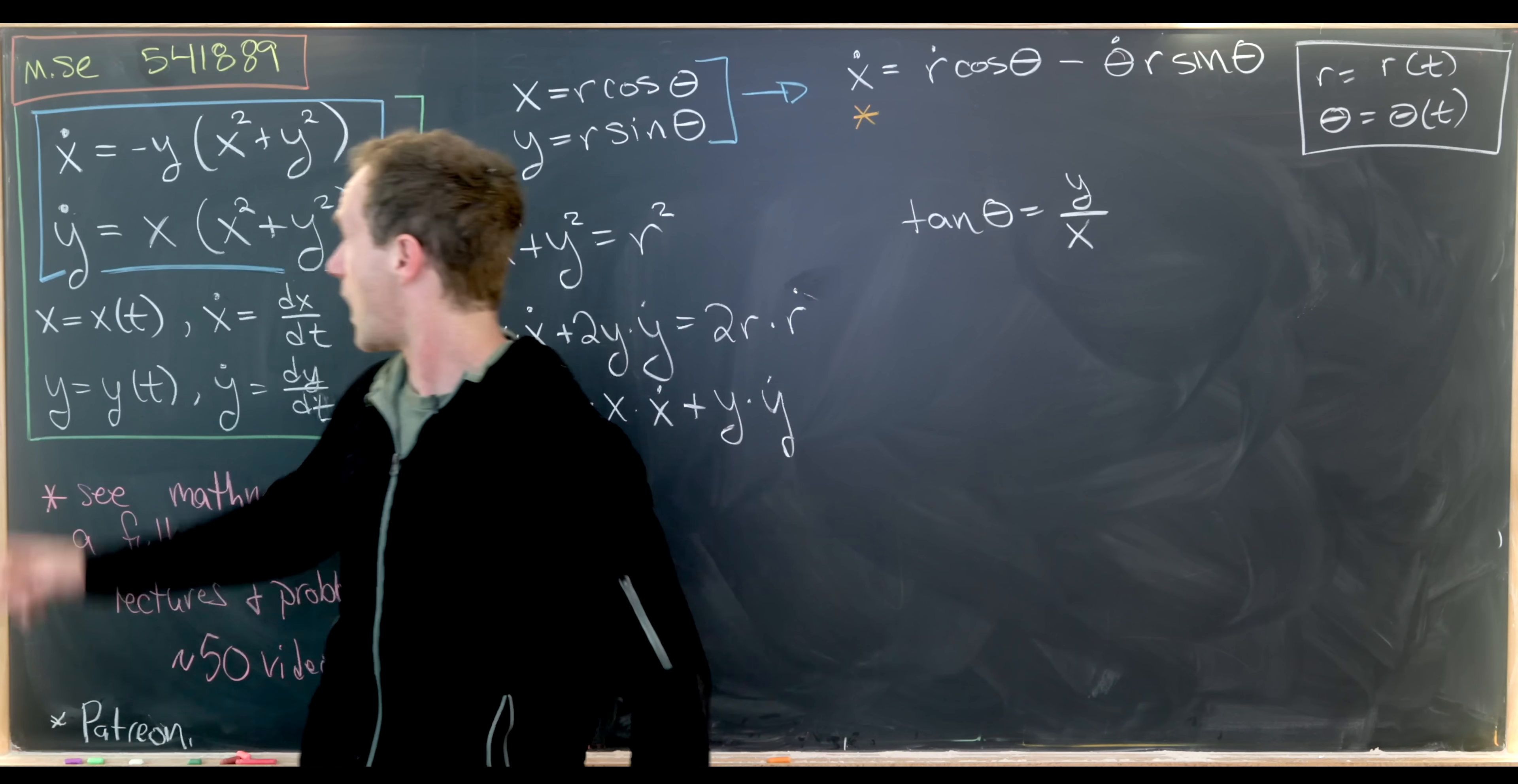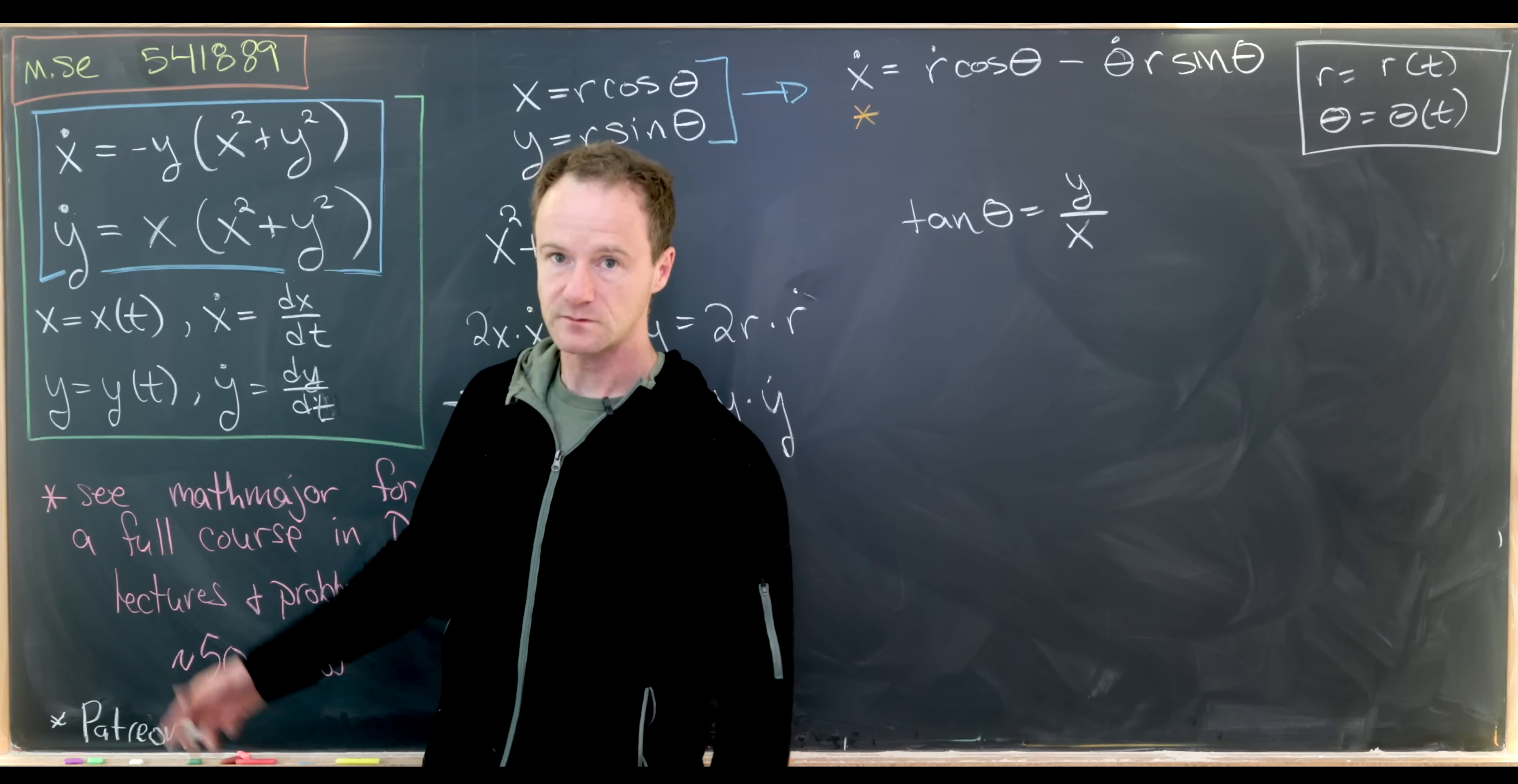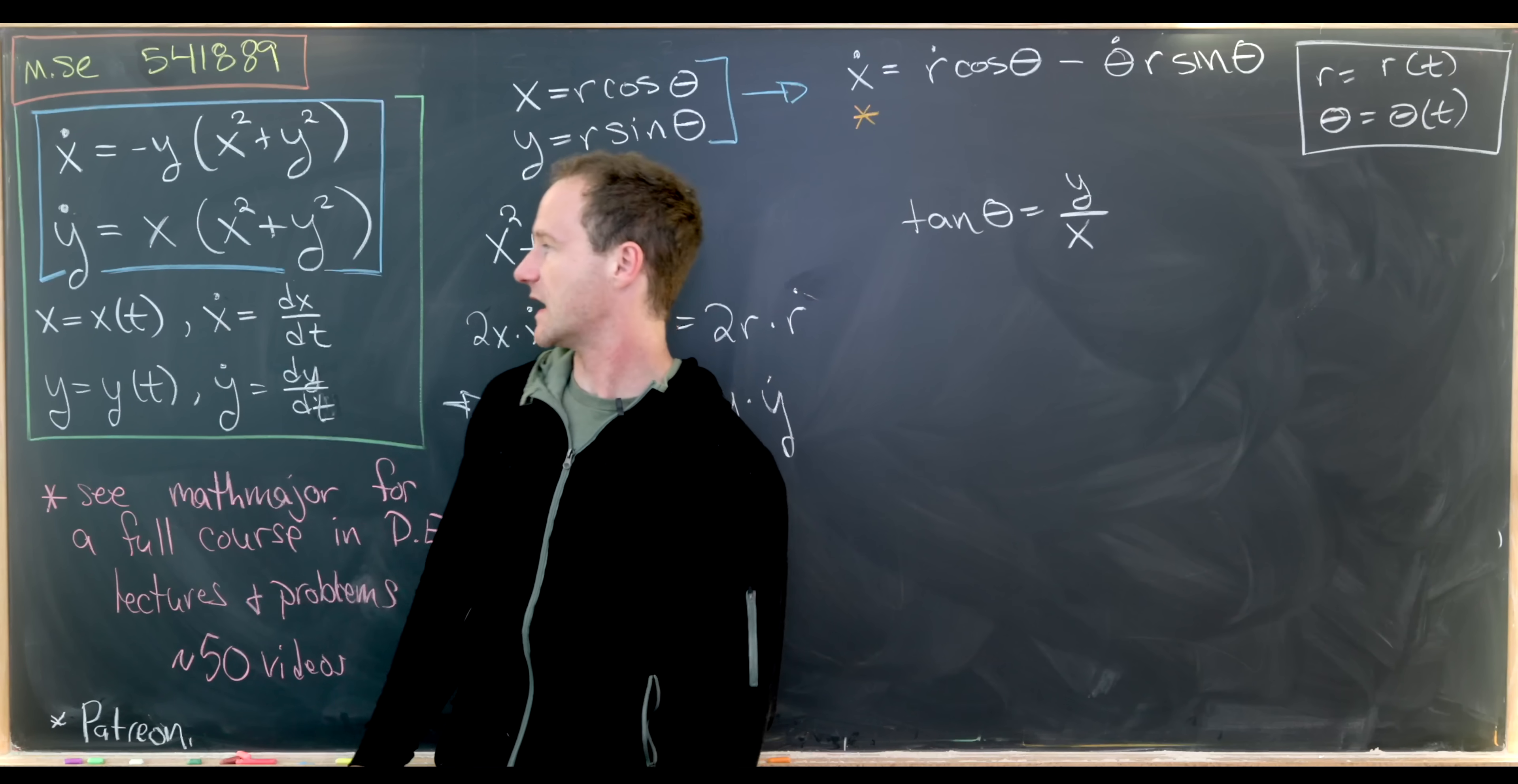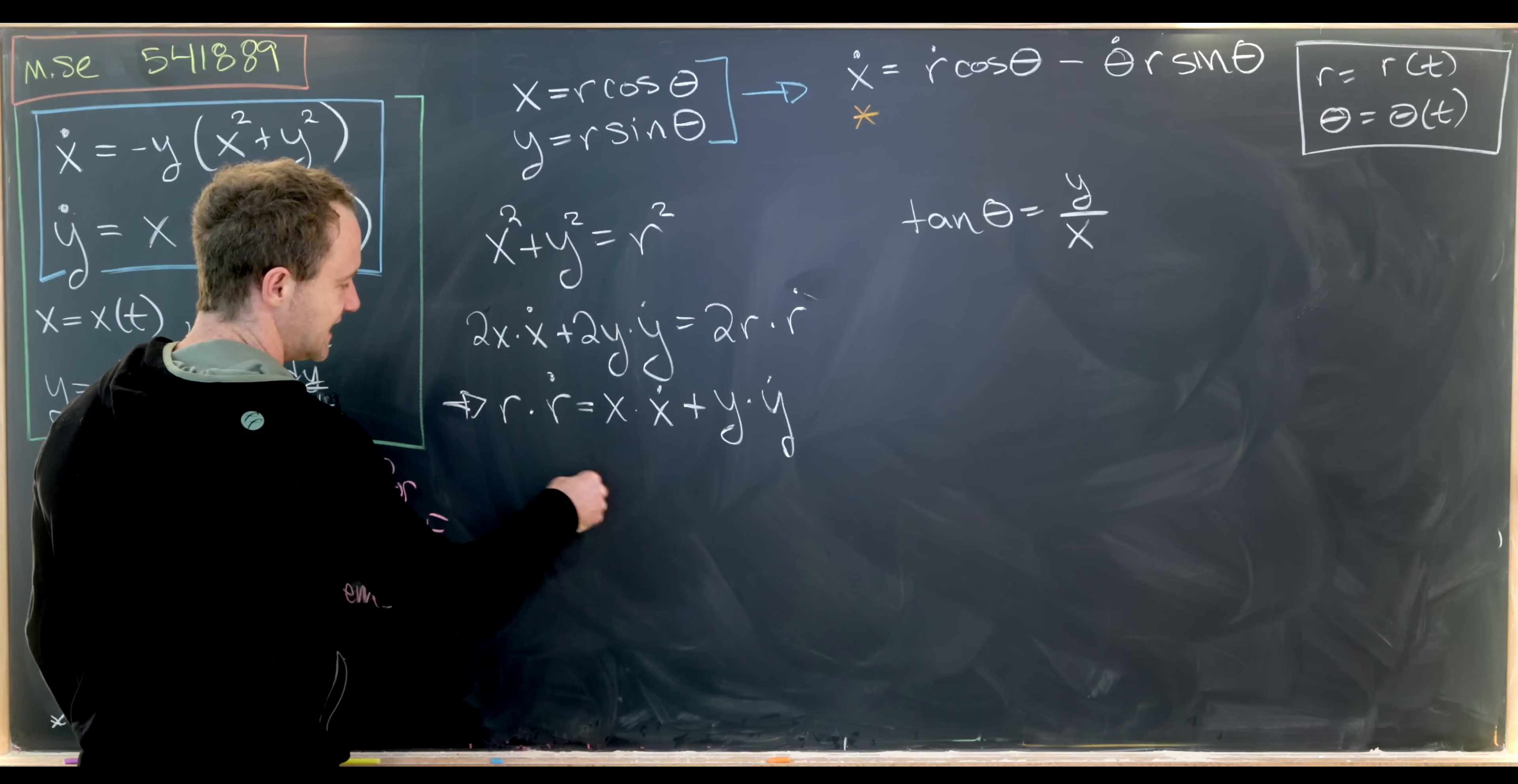But check it out. Y dot and x dot are suspiciously similar. They both have this x squared plus y squared. This one is attached to a minus y and y dot is attached to an x. So let's see if that provides us any simplification.